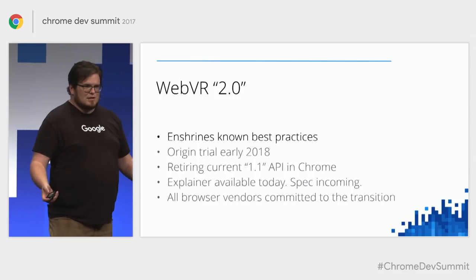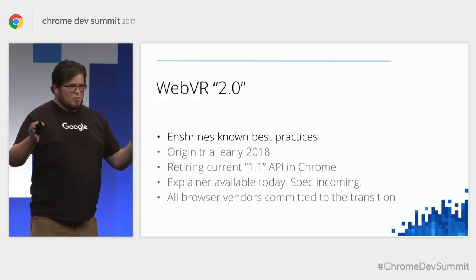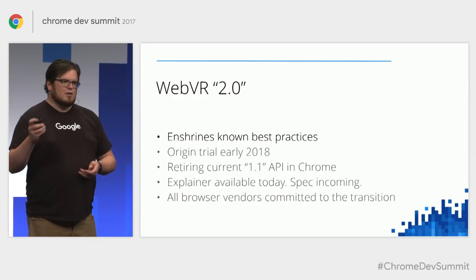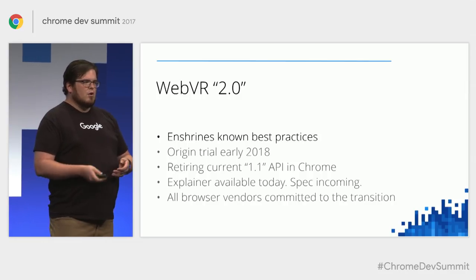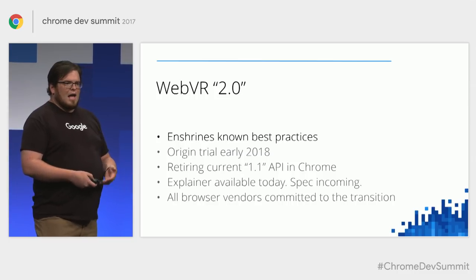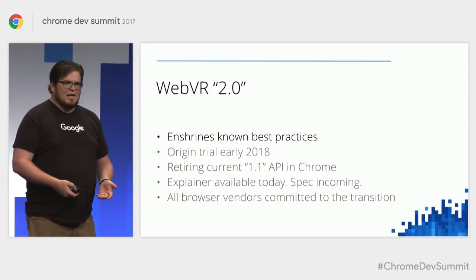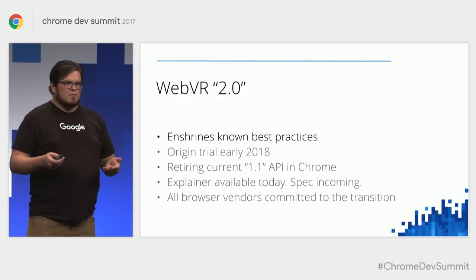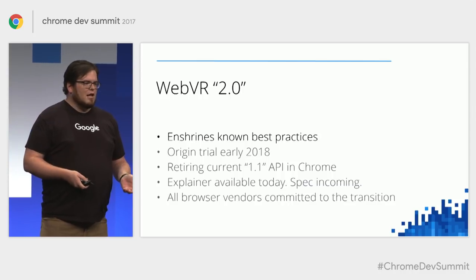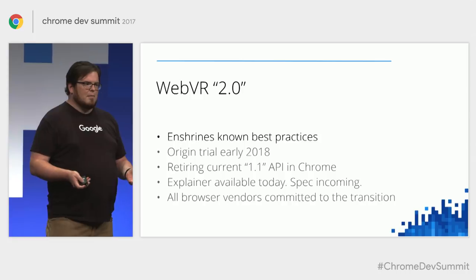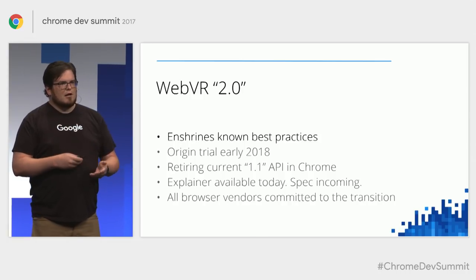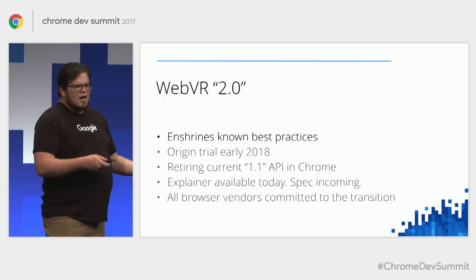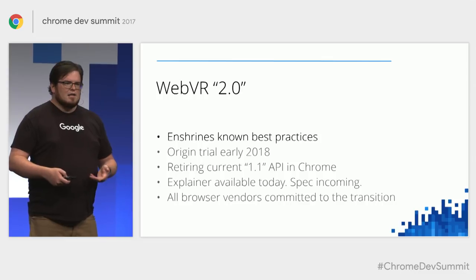We've collected all of this information to build what we refer to internally as the WebVR 2.0 API. When it comes out, it won't be called 2.0 — it will just be WebVR — but that's how we disambiguate it internally. The big focus is enshrining the best practices found through origin trials right into the API, making it, wherever possible, impossible to do the wrong thing. We're hoping to start origin trials for that version in early 2018, and while there will be overlap to allow developers to transition, we'll be retiring the current version after that. The new API is available as an explainer today, and every browser vendor who has shipped a WebVR 1.1 implementation has committed to transitioning to the new version.